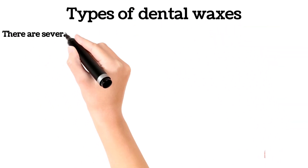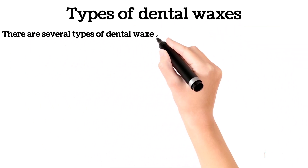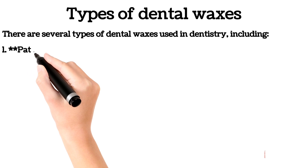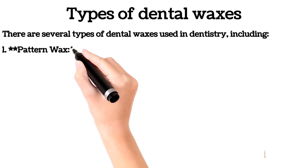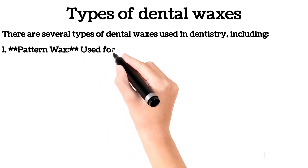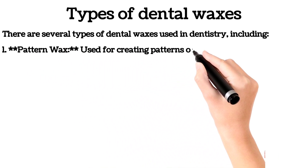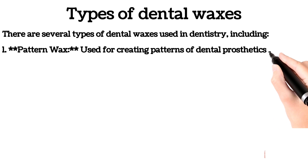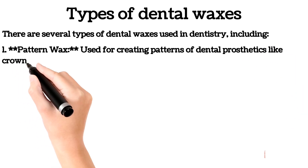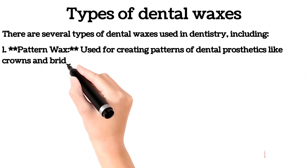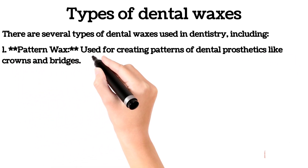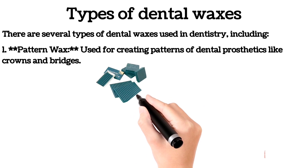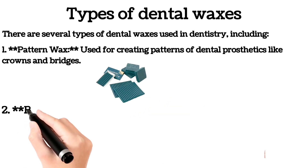Types of Dental Waxes. There are several types of dental waxes used in dentistry. Number 1: Pattern Wax, used for creating patterns of dental prostheses like crowns and bridges. Here you can see the picture of pattern wax.